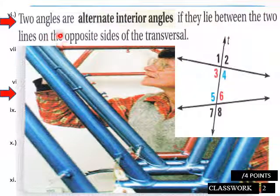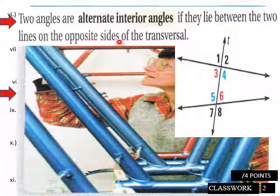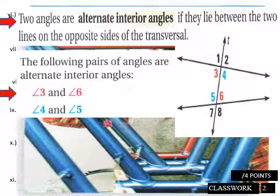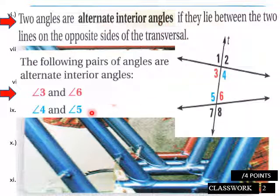Two angles are alternate interior angles if they lie between the two lines on opposite sides of the transversal. For example, angles 3 and 6 are alternate interiors, and angles 4 and 5 are alternate interior angles.